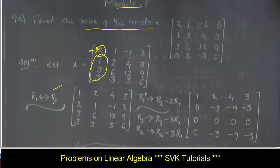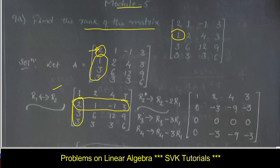Applying R1 changes to R2: since the leading term has 2 and the term below is 1, I will interchange the second row to the first row and the first row to the second row. Then applying R2 as R2 minus 2 times R1, R3 as R3 minus 3 times R1, and R4 as R4 minus 3 times R1. Applying these operations, all the elements are affected and this is the new matrix obtained.